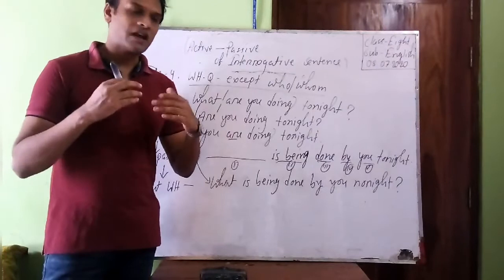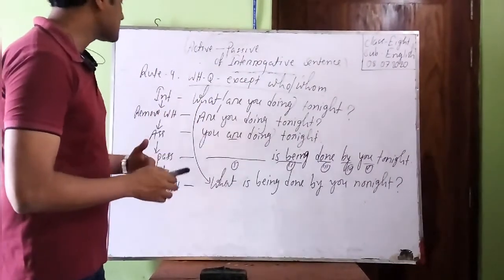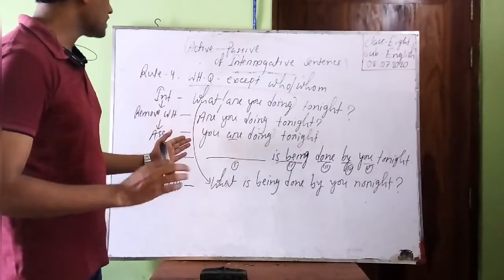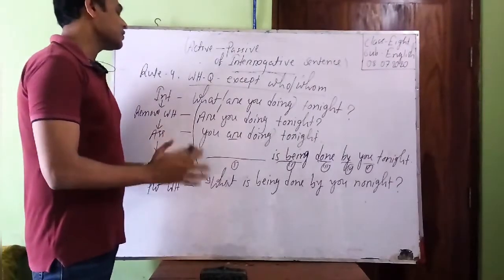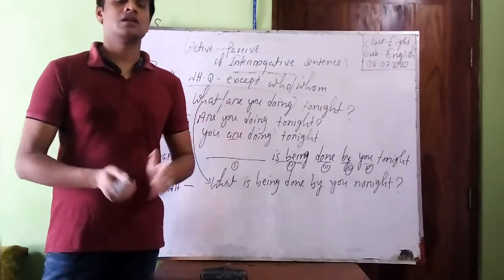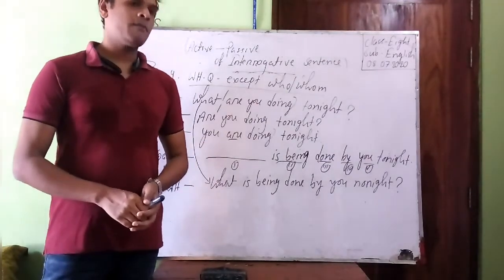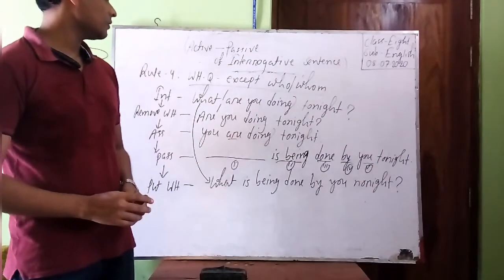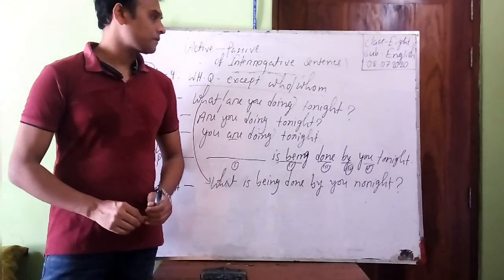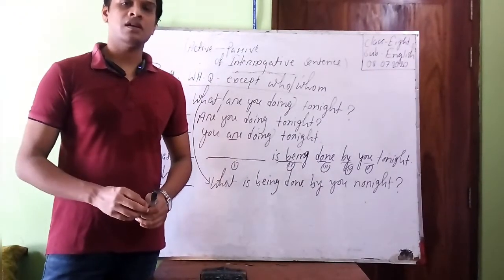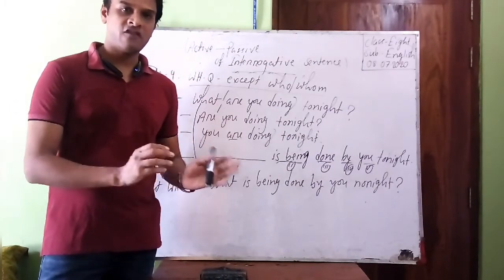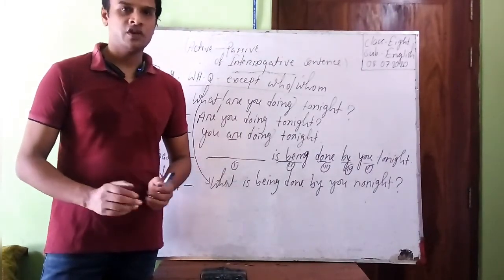Dear students, these are the steps you have to follow in this point. If you follow all these steps which I have already shown you, you can turn any interrogative sentence into passive. That's all about interrogative sentences from active to passive, and we have four rules in total. If you have any problem you can contact me, and thank you very much for joining.